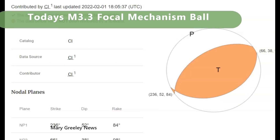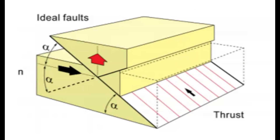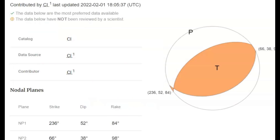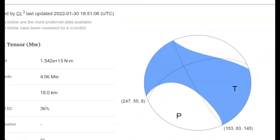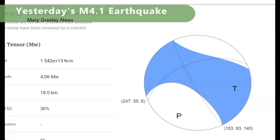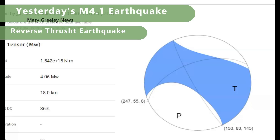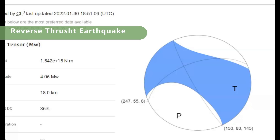Here's the moment tensor ball for today's earthquake. Here's an example of a Thrust Earthquake where one fault line rises up and slides up over the other fault line. This looks to be a normal Thrust Earthquake, not a reverse Thrust Earthquake. The 4.1 that occurred yesterday in Southern California was a reverse Thrust Earthquake. Both Thrust and reverse Thrust Earthquakes are very dangerous if out in the ocean — they can create tsunamis.